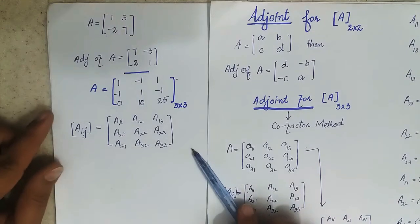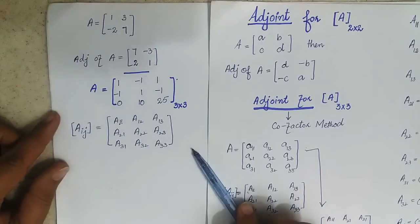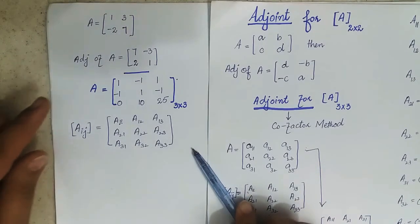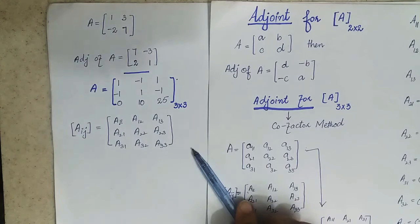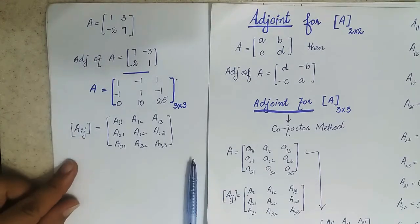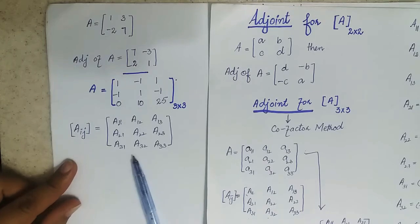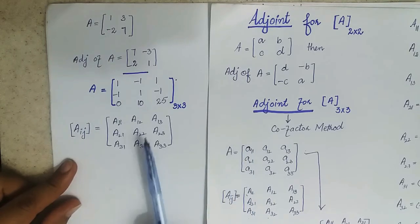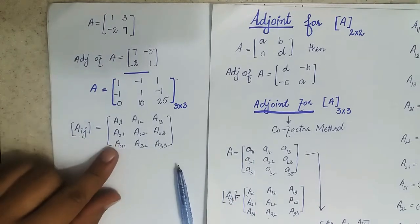Consider we have this 3 by 3 square matrix. Firstly, we will find its cofactor matrix using the cofactor method, and then we will find the adjoint from this matrix.